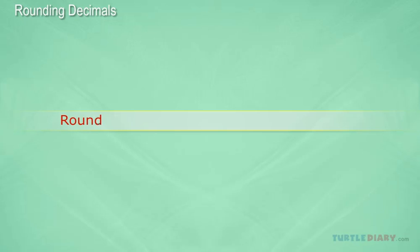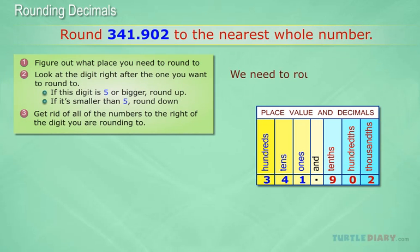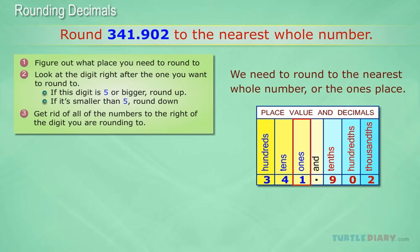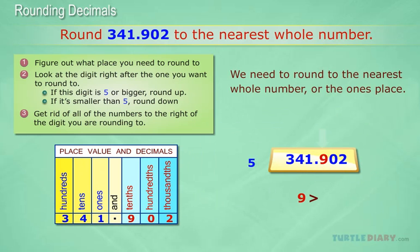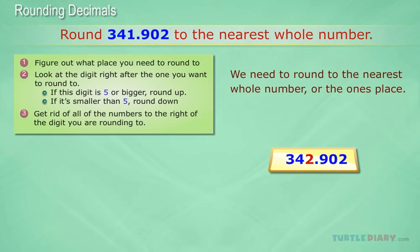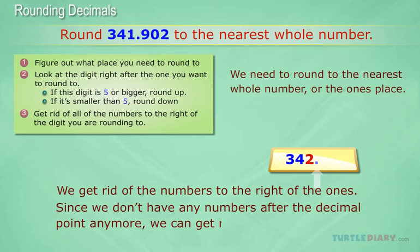Question: Round 341.902 to the nearest whole number. Answer: We need to round to the nearest whole number, or the ones place. Let's look at the digit right after it. The digit is bigger than 5, so we add 1 to our ones digit. Finally, we get rid of the numbers to the right of the ones. Since we don't have any numbers after the decimal point anymore, we can get rid of it, too.